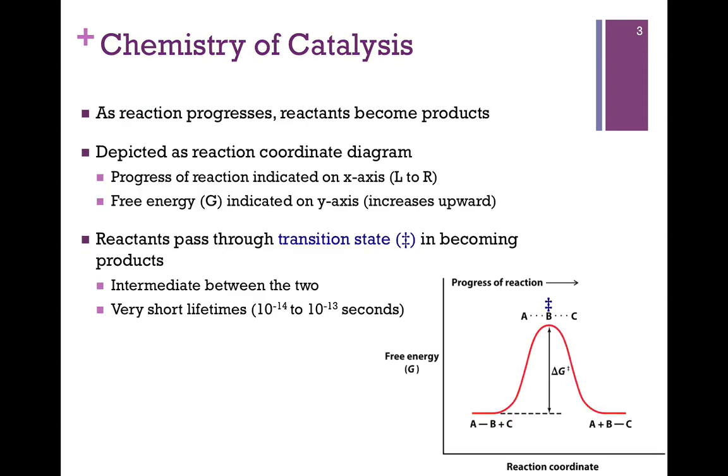This is depicted in an energy diagram in the lower right here. On the x-axis, we have the reaction coordinate. That simply tells us where are we in the progress of the reaction. Our Gibbs free energy is on the y-axis, and of course, that's increasing as we go up the axis. And so we can see what the energy level is and how it changes as we proceed through the reaction.